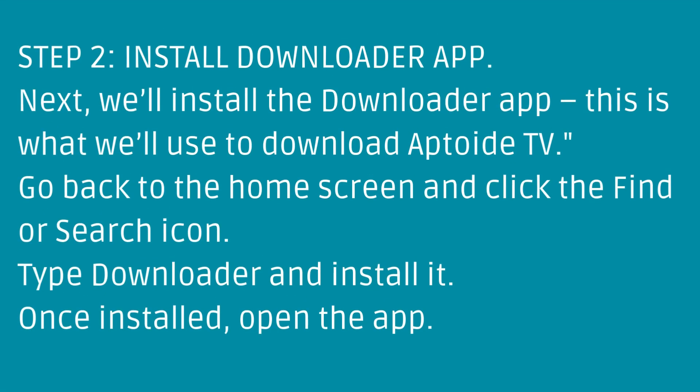Step 2: Install the Downloader App. Next, we'll install the Downloader App — this is what we'll use to download Aptoy TV. Go back to the home screen and click the Find or Search icon. Type Downloader and install it. Once installed, open the app.